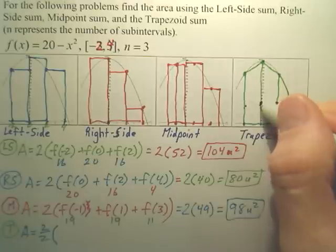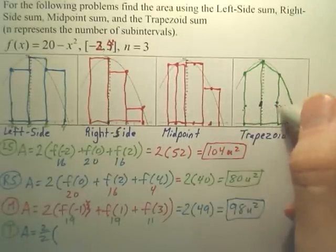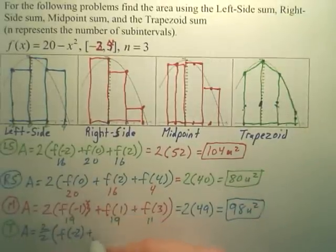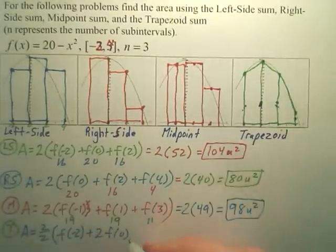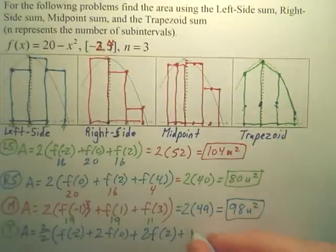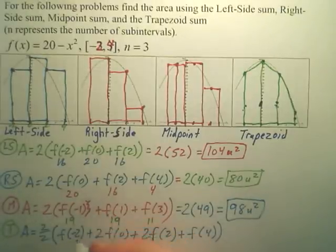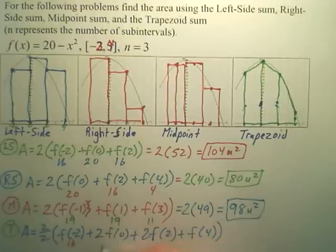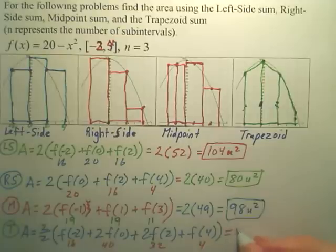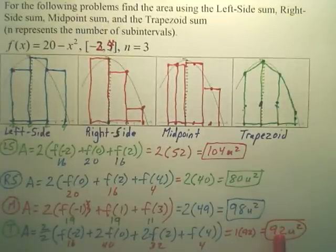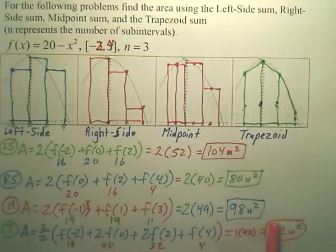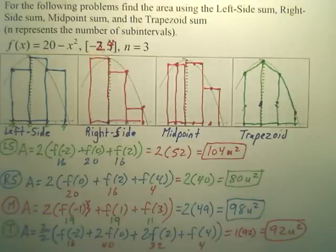The basic formula here uses half of the width — the width is 2, so you take half of that. You're counting the inside boundary lengths twice. So it's basically f of negative 2, plus 2 times f of 0 because we counted this one twice, plus 2 times f of 2, plus f of 4 for the outside one. f of negative 2 is 16, 2 times f of 0 is 40, 2 times f of 2 is 32, and f of 4 is 4. When we add that up, we get 1 times 92, so the answer is 92 square units. So somewhere between these numbers, and we have ways to get exact answers as well.